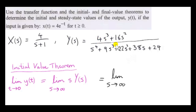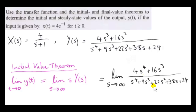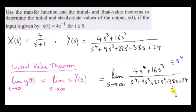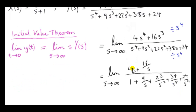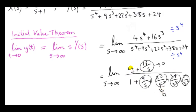So we multiply s by Y(s), and on top we get 4s⁴ + 16s³. If we let s approach infinity, the numerator and denominator both approach infinity — infinity over infinity doesn't make sense. So for this type of fraction, we divide above and below by the highest power of s, which is s⁴. Now as s approaches infinity, all fractional terms approach 0, and the entire expression approaches 4 over 1, which is 4. So the initial value of the output is 4.